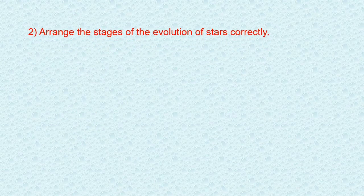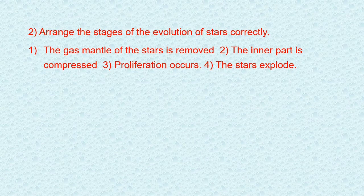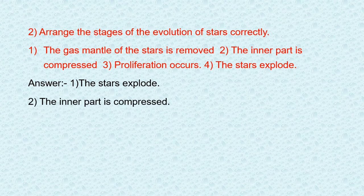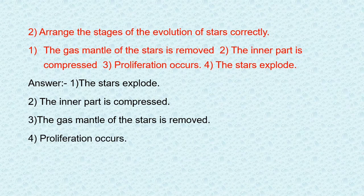Question number two: arrange the stages of the evolution of stars correctly. The stages are: the gas mantle of the star is removed, the inner part is compressed, proliferation occurs, and the star explodes. The correct order is: first, the star explodes; second, the inner part is compressed; third, the gas mantle of the star is removed; and fourth, proliferation occurs.